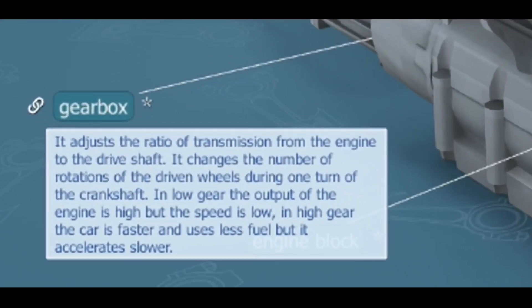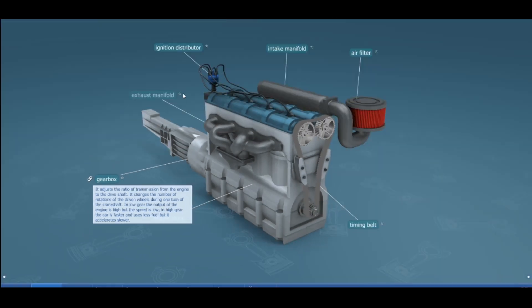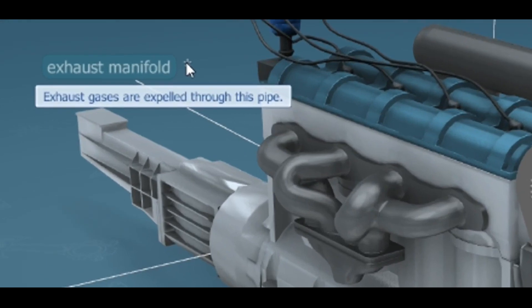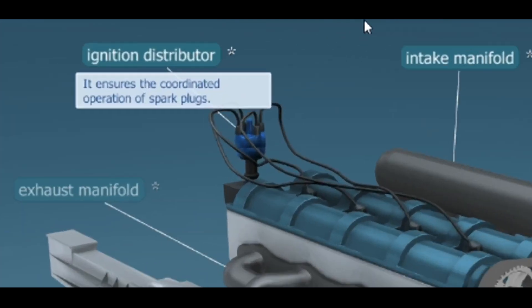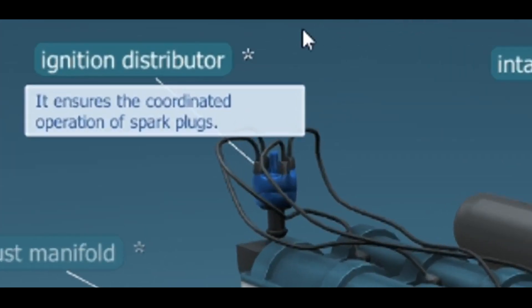The gearbox adjusts the ratio of transmission from the engine to the drive shaft, changing the number of rotations of the driven wheels per turn of the crankshaft. The exhaust manifold is where the exhaust gases are expelled through the exhaust pipe. The ignition distributor ensures the coordinated operation of the spark plugs.